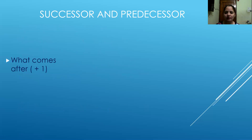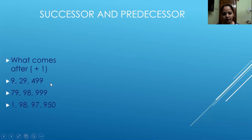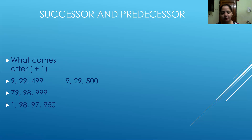When we say what comes next or what comes after, how do we find the successor? By adding one to the number. Let's learn it with an example. The first number given is 9,29,499. When I am going to add one to it, what will be the answer? 9,29,500. So that means the successor is 9,29,500.